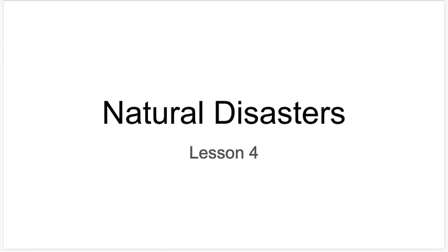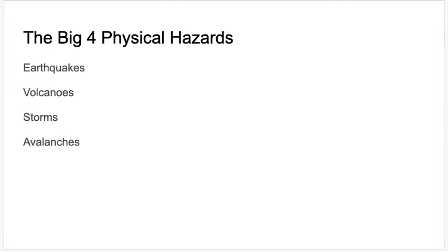In Lesson 4 of our chapter on Human Health and Environmental Risk, we're talking about physical hazards, which predominantly include natural disasters. The big four physical hazards are earthquakes, volcanoes, storms, and avalanches.